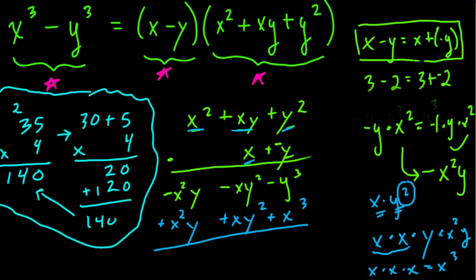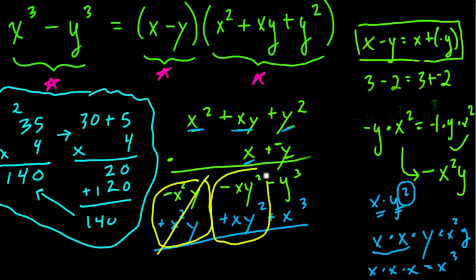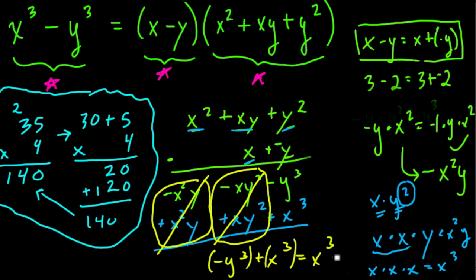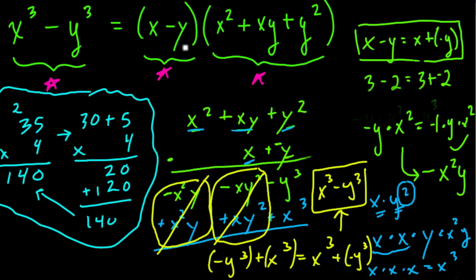Now what happens? These two terms are opposites: negative x squared y and positive x squared y cancel out. These two terms are also opposites: negative xy squared and xy squared cancel out. That leaves us with negative y cubed plus x cubed. With addition we can change the order, so switching gives x cubed plus negative y cubed — which we can rewrite as x cubed minus y cubed. So by multiplying out these two factors, we confirm they do equal x cubed minus y cubed.